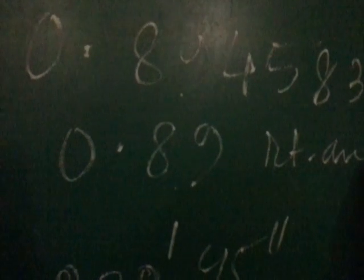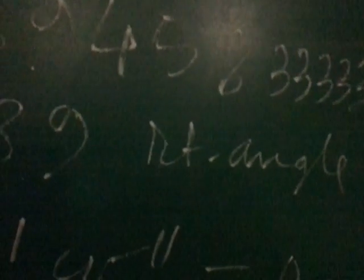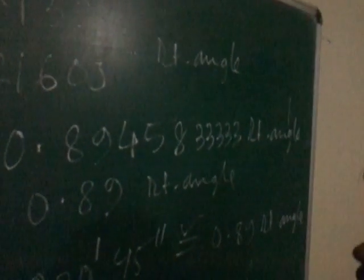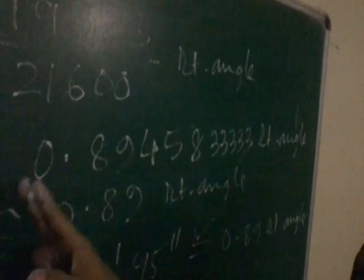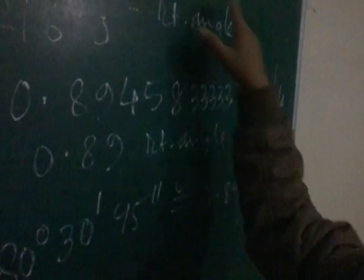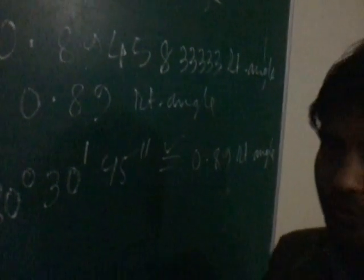So 80 degree, 30 minutes, 45 seconds will be 0.89 right angle. This is the answer. Now, if we express this value in the circular system — we have already got that 80 degree, 30 minutes, 45 seconds is in right angle form. Now if we express the same value in circular measurement form, what will be the result?